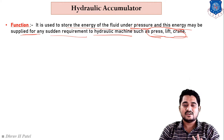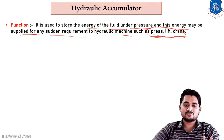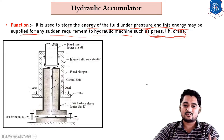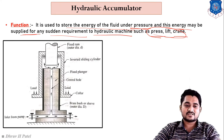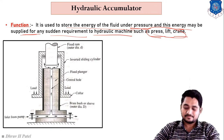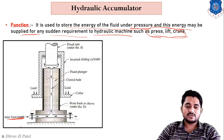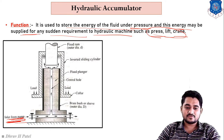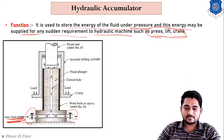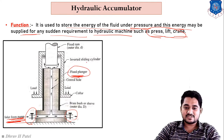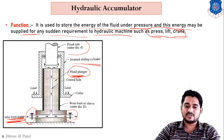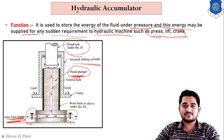In the construction of the hydraulic accumulator, one inlet is connected from the pump to supply higher-pressure liquid. There is an outlet pipe, one fixed ram or fixed plunger, and a sliding cylinder mounted on the plunger. Using this construction, a higher amount of pressure energy can be supplied to any machine as needed.